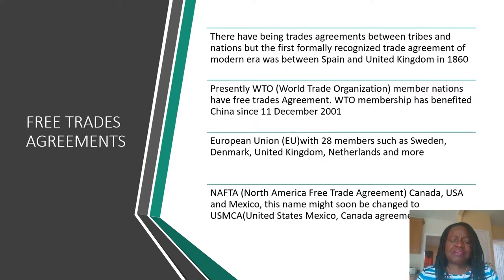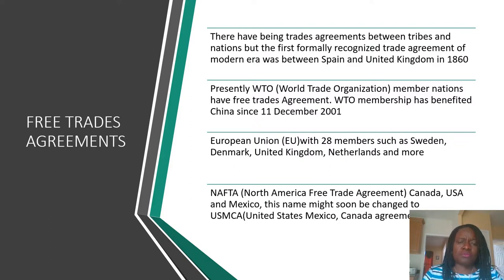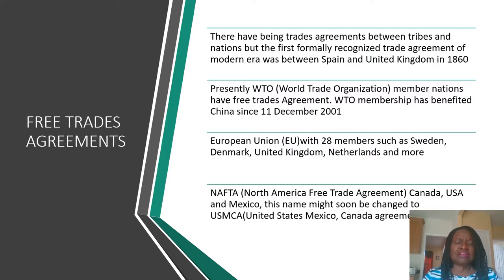There have been trade agreements between tribes and nations, but the first formally recognized trade agreement of the modern era was between Spain and the United Kingdom in 1860. People have been trading for a long time. Presently, World Trade Organization member nations have free trade agreements where any nation in the world can apply to join.